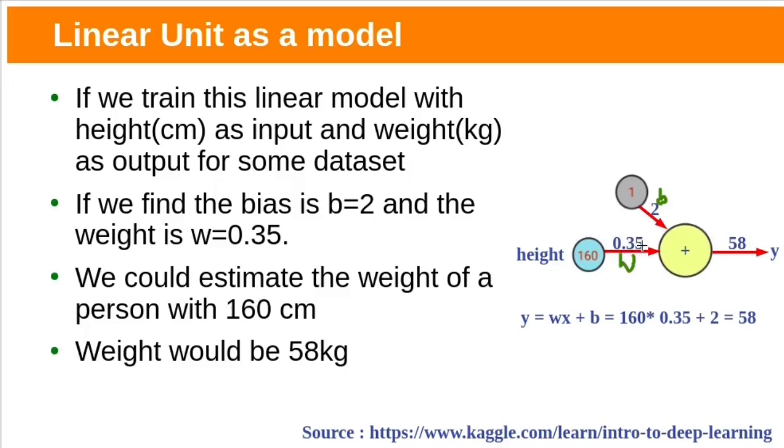After training, the bias value is 2 and weight is 0.35. Then we can use this model to estimate the weight of a person with 160 centimeters like this. 160 will be multiplied with connection weight 0.35, bias value multiplied with 1, so 160 into 0.35 plus 2. The result will be 58. If person is 160 centimeters, his expected weight will be 58 kilograms, predicted by our linear model.